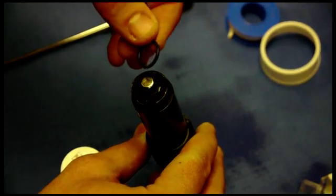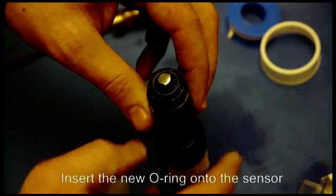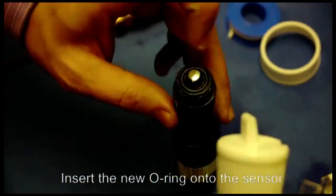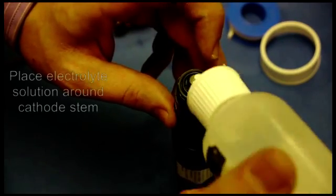Next you want to take your new O-ring, place it around the stem of the cathode, and then use fill solution and cover the tip of the cathode.